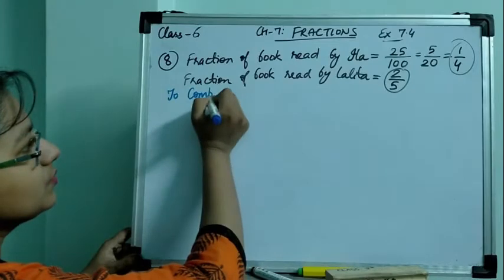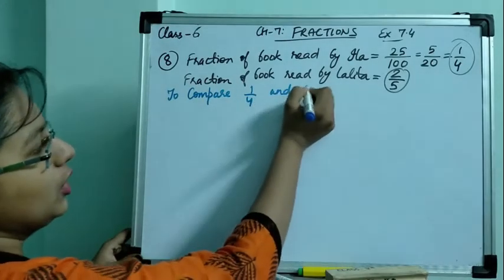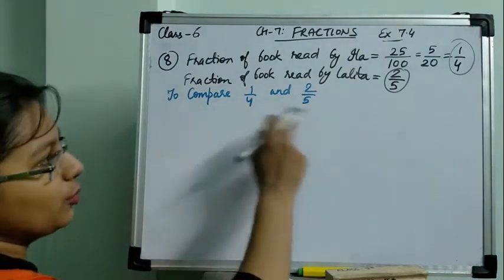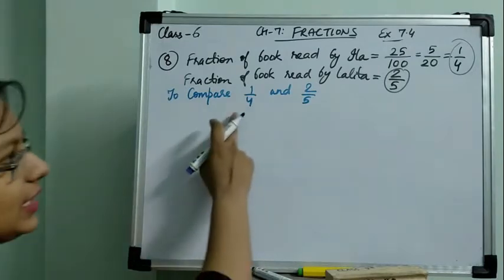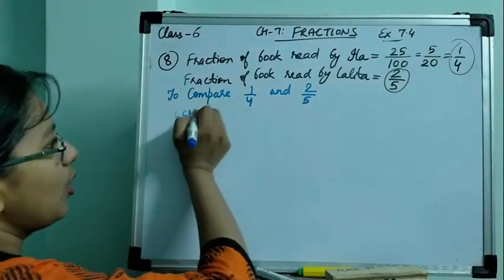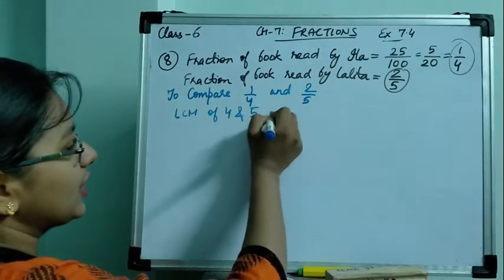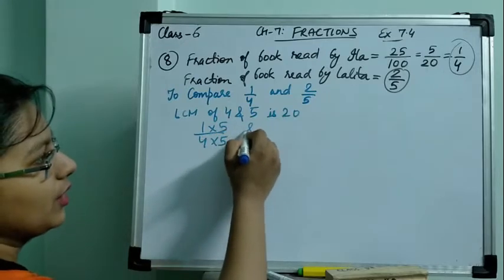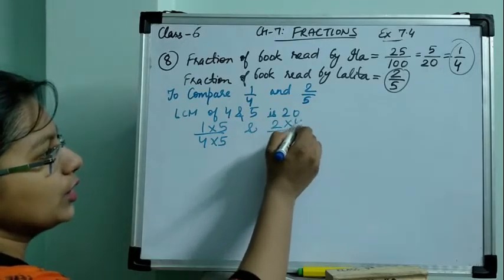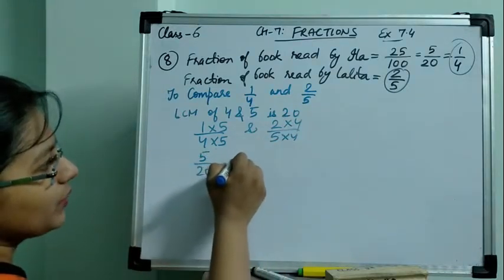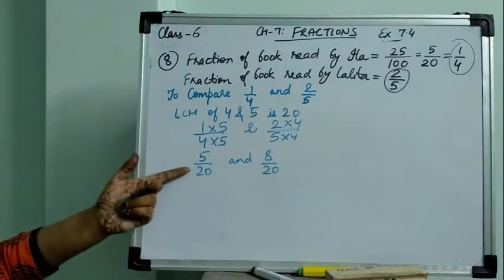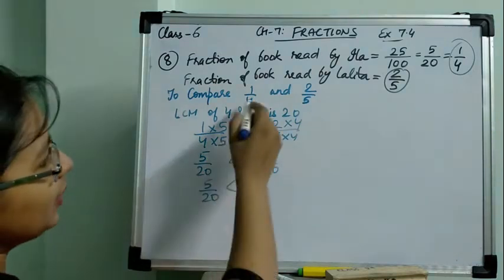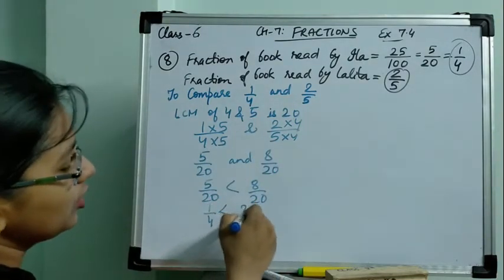To compare 1 by 4 and 2 by 5, these cannot be simplified and the denominators are different, so we find the LCM of 4 and 5, which is 20. Converting: 1 by 4 becomes 5 by 20, and 2 by 5 becomes 8 by 20. Since 5 by 20 is less than 8 by 20, we have 1 by 4 is less than 2 by 5. Therefore, Ila read less.